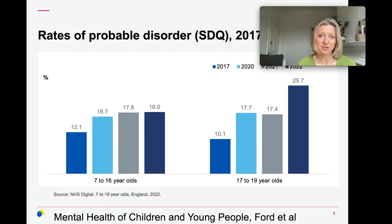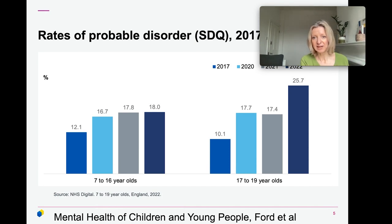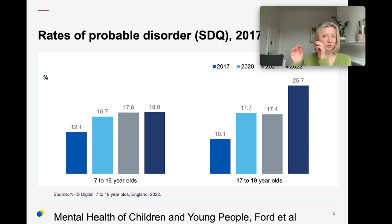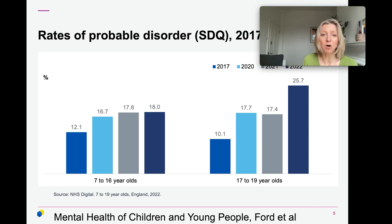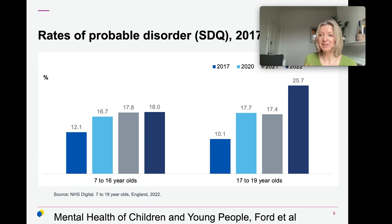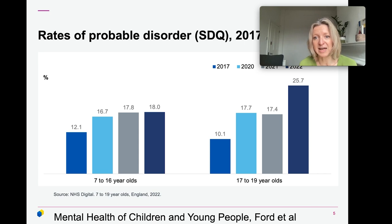Also to flag about the child surveys: although the main face-to-face surveys were carried out in 1999, 2004, and 2017, there have been a series of Covid follow-up surveys carried out online, which have provided really useful insight into the pandemic and school closures in relation to child mental health.